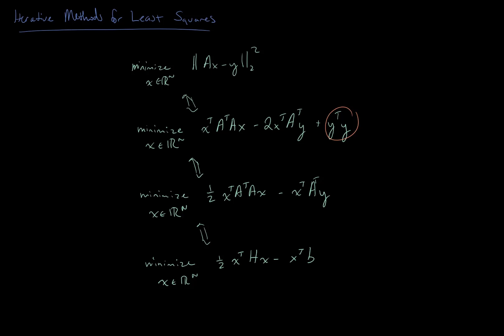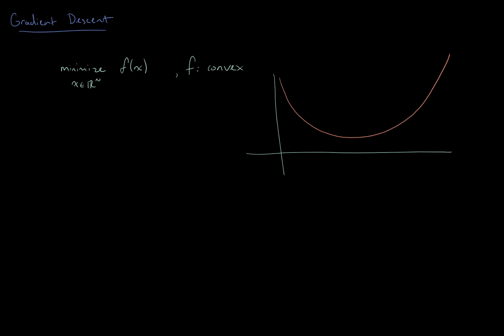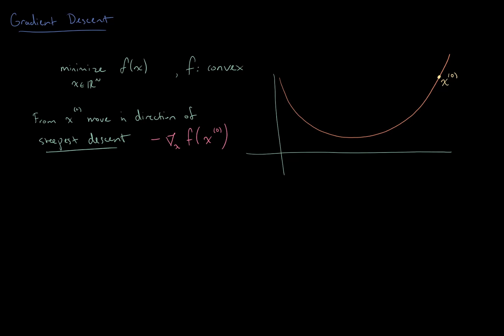What we can do is apply a classic algorithm for iteratively minimizing a function like this called gradient descent. The basic idea is quite simple: we're trying to minimize some convex function f of x — we can think of convexity as meaning we have a bowl-shaped function. The idea in gradient descent is that we first pick an initial guess x naught, perhaps at random, and then we want to move in the direction of steepest descent. As we mentioned in our review of multivariable calculus, the direction of steepest descent is just the negative gradient of that function evaluated at that point.